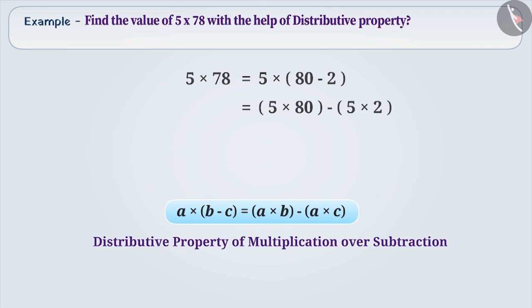Solving this, we get 400 minus 10 which is equal to 390. Therefore, by using the distributive property, we can find the solutions very easily.